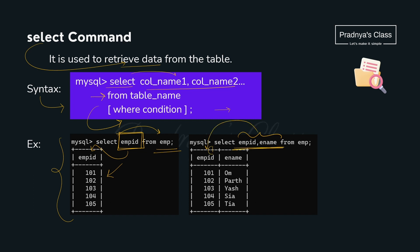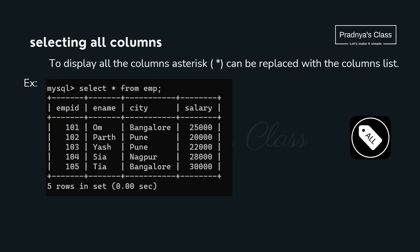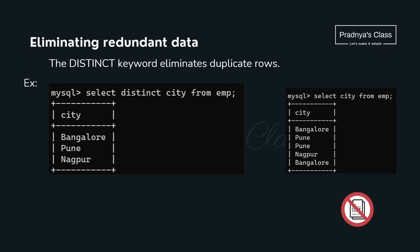If you want to display all the columns of the table, we use the star (*) operator — also called the all operator. The command SELECT * FROM employee displays all columns.